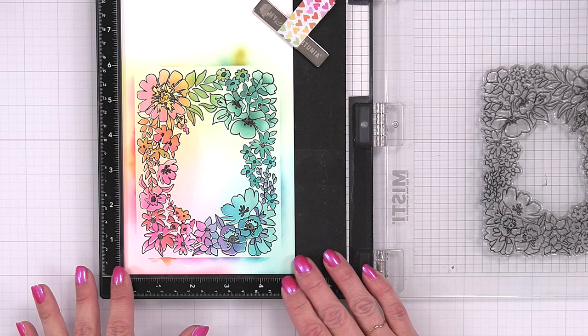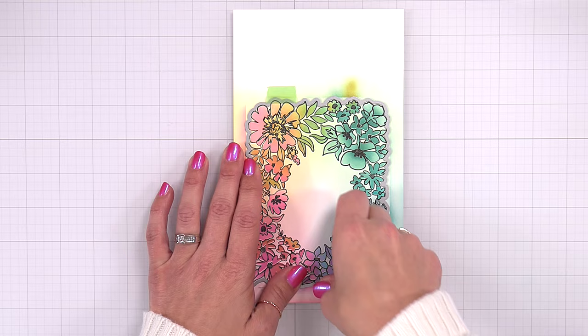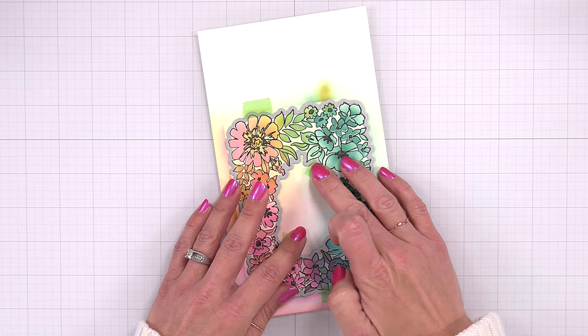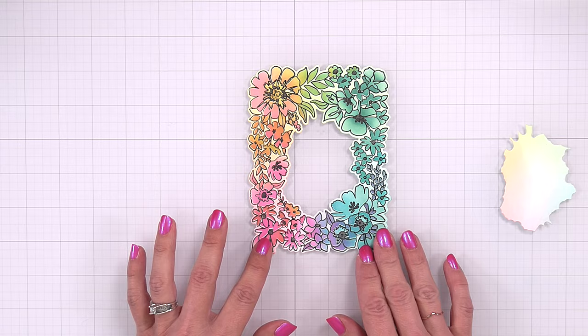I'll then take the coordinating die and line it up over the frame. I'm holding that down with EZ Tape. I'm also going to take that center piece and hold that down as well. So it's going to die cut out the entire frame and the center.